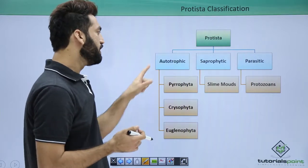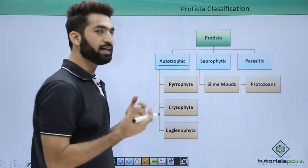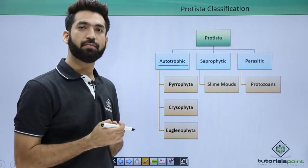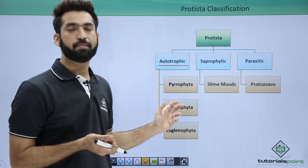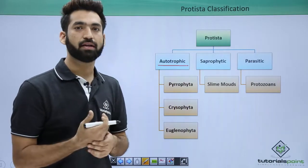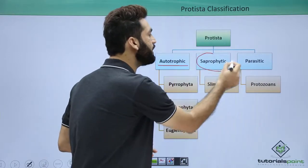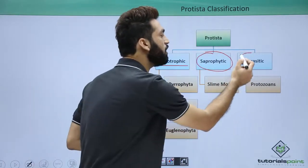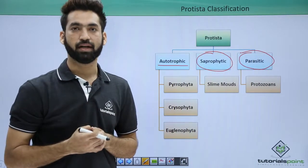Protista members can be autotrophic — they can make their food in the presence of sunlight, and they have chlorophyll along with some other pigments to trap light and convert it into chemical energy for food synthesis. When you talk about saprophytes, they grow on decaying matter. And when you talk about parasitic members, they have a living host to infect and suck nutrients from.